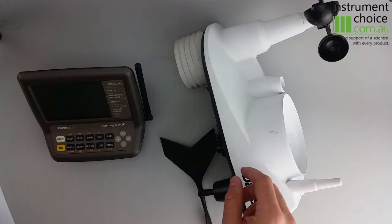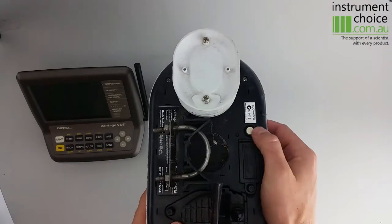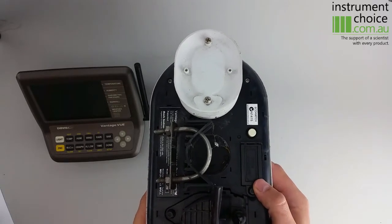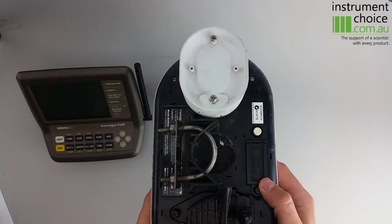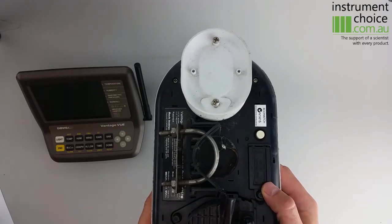The first step is to work out which transmitter ID your ISS is currently transmitting on. To do this, flip the unit over and depress the white button on the base of the unit quickly. The unit will then flash the relevant number of times that your transmitter is set to. In our particular case, it's set at transmitter 6.